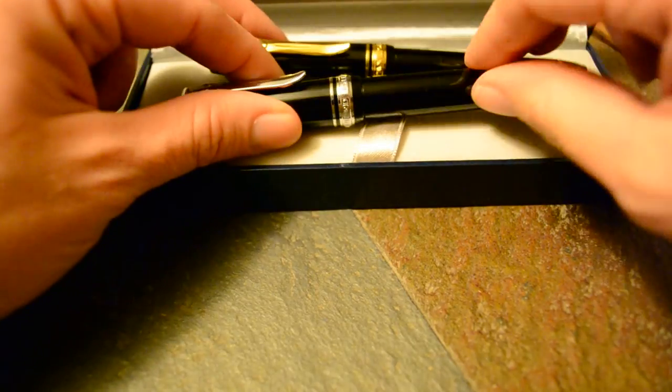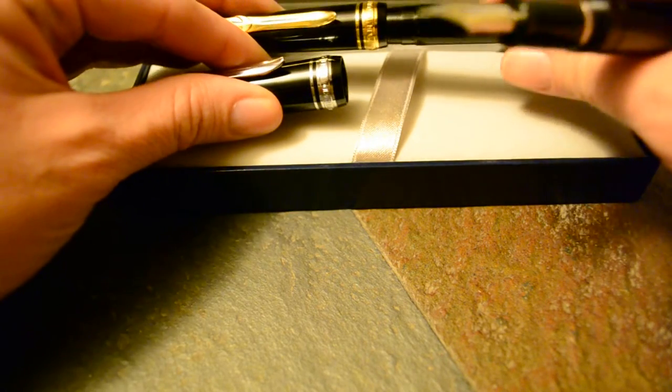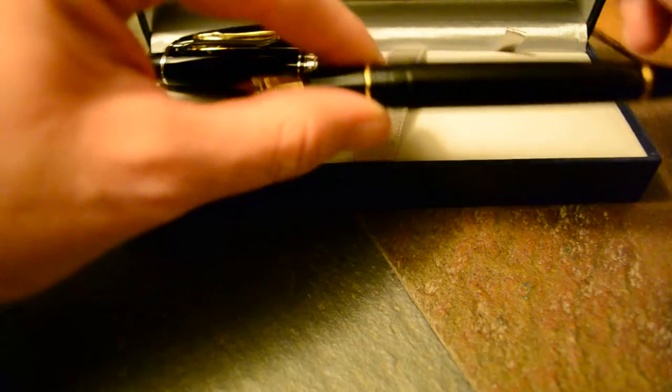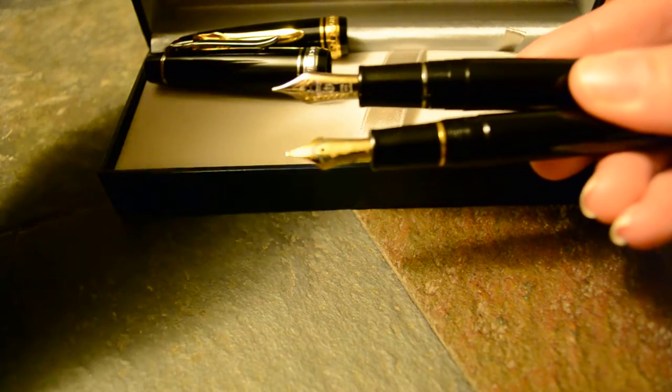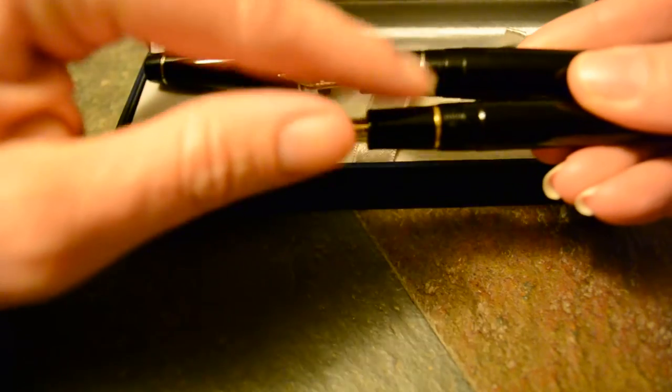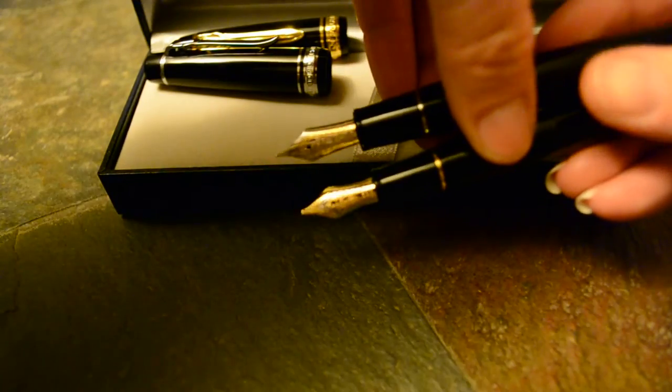Just like the 1911 that Sailor makes, they come in two different nibs—well, obviously different sizes of nibs—but the standard version is a 21 carat gold solid gold nib, and then the slim version is a 14 carat. I don't know if you can pick it up on the video or not, but these are two-tone nibs.